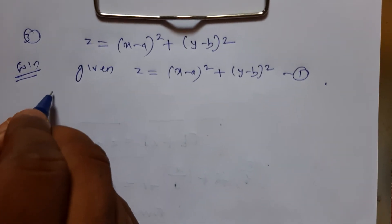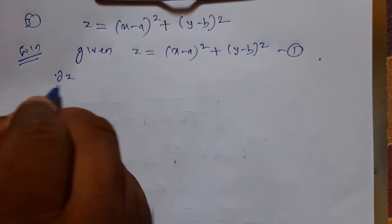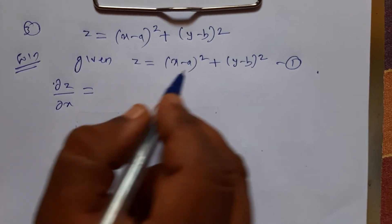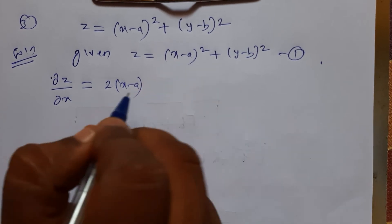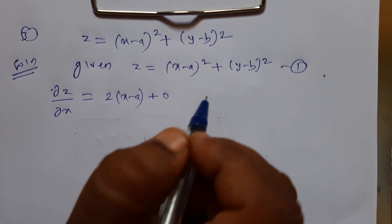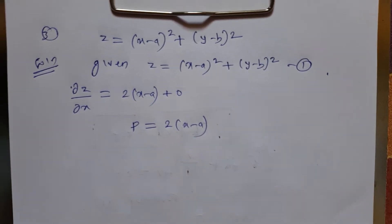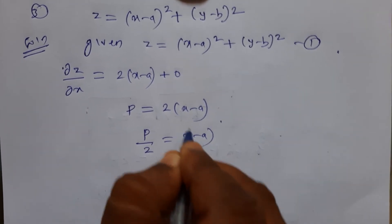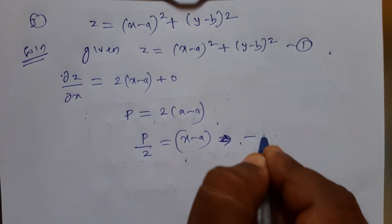Differentiating partially with respect to x: the derivative of (x - a)² is 2(x - a)·1, and the derivative of (y - b)² is 0 (y is constant). So dou z/dou x = p = 2(x - a). Therefore p/2 = x - a. I denote this as equation number 2.